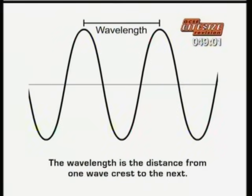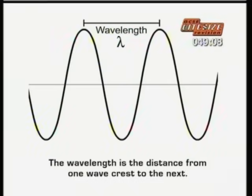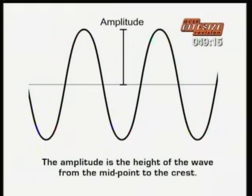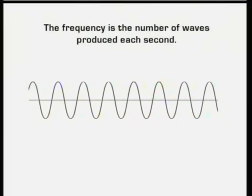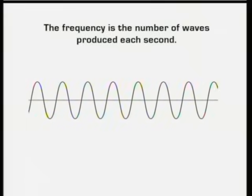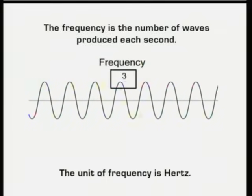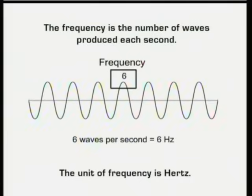The wavelength of a wave is the distance from one crest to the next. The symbol for wavelength is the Greek letter lambda. The amplitude of a wave is the height from the midpoint to the crest. The frequency of a wave tells you the number of waves passing a point each second. The unit of frequency is the hertz.